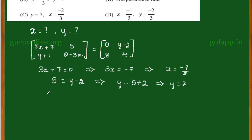And the next element is Y plus 1 is equal to 8. This implies I need only Y. So I shift that 1 to RHS, I get 8 minus 1. So I get Y equal to 8 minus 1 which is 7.